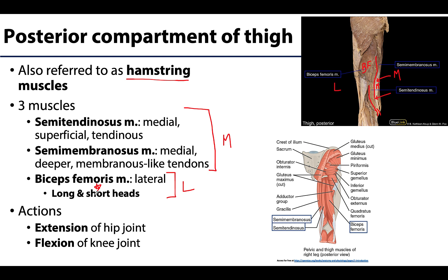The hamstrings as a group can be thought of as a two-joint muscle, crossing both the hip and the knee joints, and play important roles in actions occurring at both. The hamstring muscles will play a role in extension of the hip joint, and this is particularly important in extension that occurs with walking on flat ground or even in a regular standing position — that type of extension that's not quite as forceful. The other major extensor of the hip joint is the gluteus maximus, which is particularly important for more forceful or powerful extension of the hip joint.